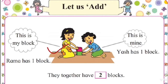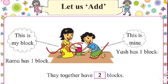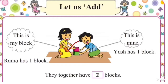Who is this? This is Rama, and this is Yash. What is Rama selling here? This is a block. Rama has one block and Yash has one block. Rama has a pink block and Yash has a green block. When they put their blocks together, how many blocks do they have?